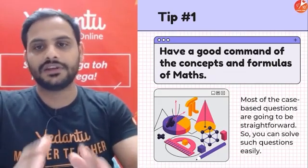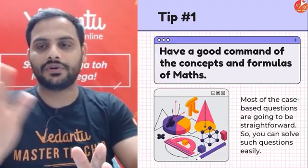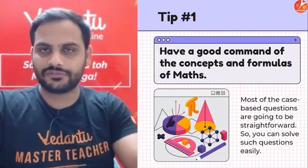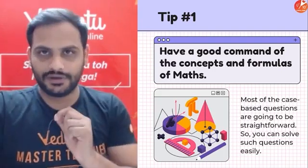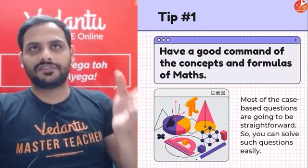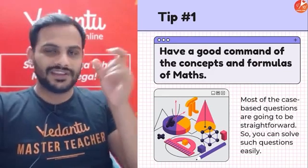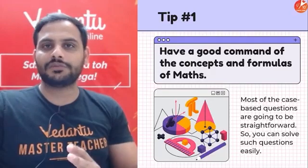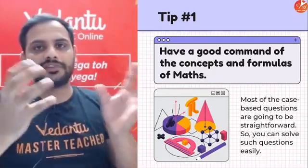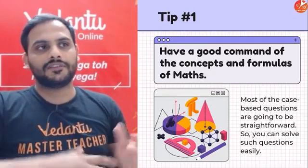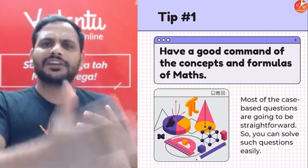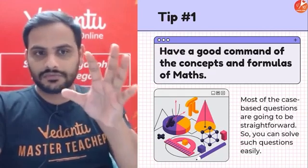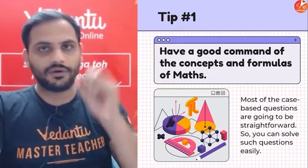Point 1: Have a good command of concepts and formulas. You should be thorough with all concepts, formulas, and different types of questions. For surface area and volumes of a cylinder, radius and height are important. For linear equations in two variables, know which are the two variables. For quadratic equations, discriminant and roots in factorization — different things matter for different topics.